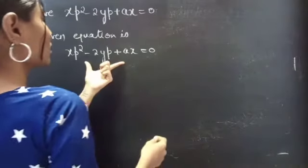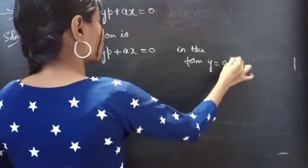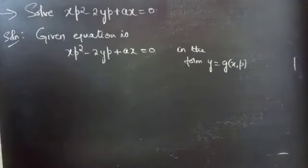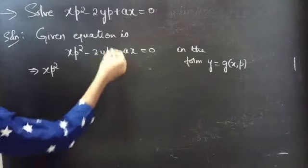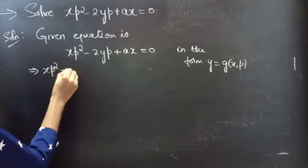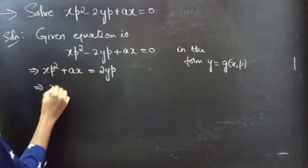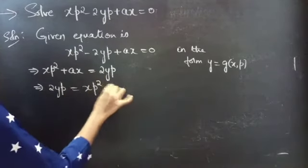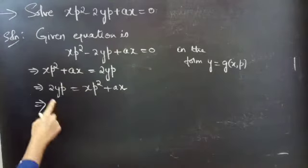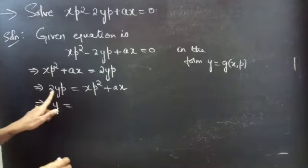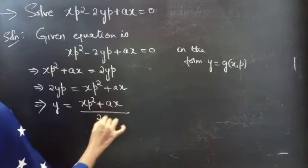Now we will express the given equation in the form y equals to some function of x and p. We are given this equation, and since y appears in the second term, we will take it to the RHS. So we get xp² plus ax equals to 2yp, which gives 2yp equals to xp² plus ax. Since we need to write the equation in y equals some function of x and p form, we take 2p to the RHS, giving y equals to xp² plus ax by 2p.